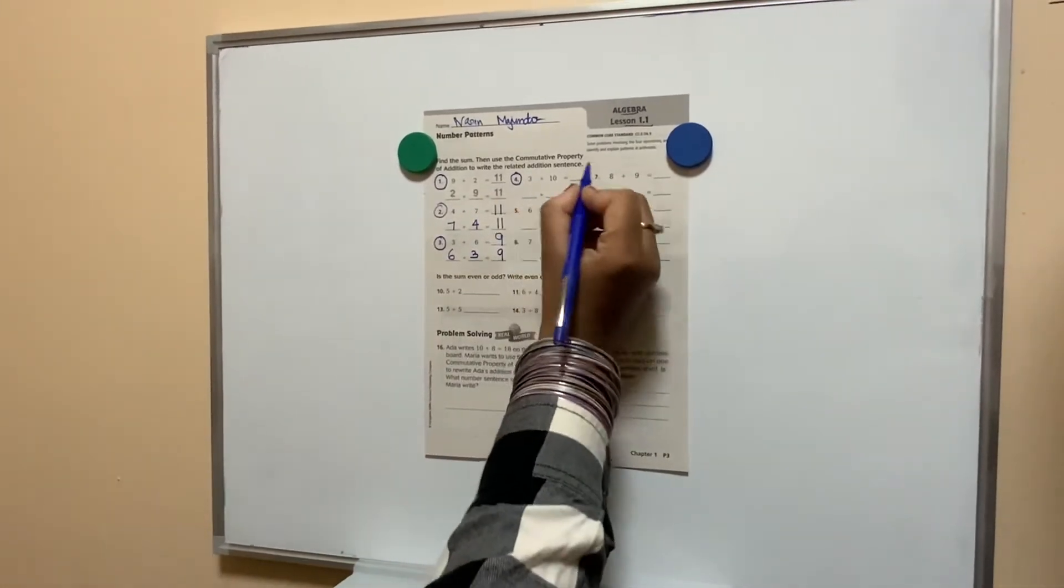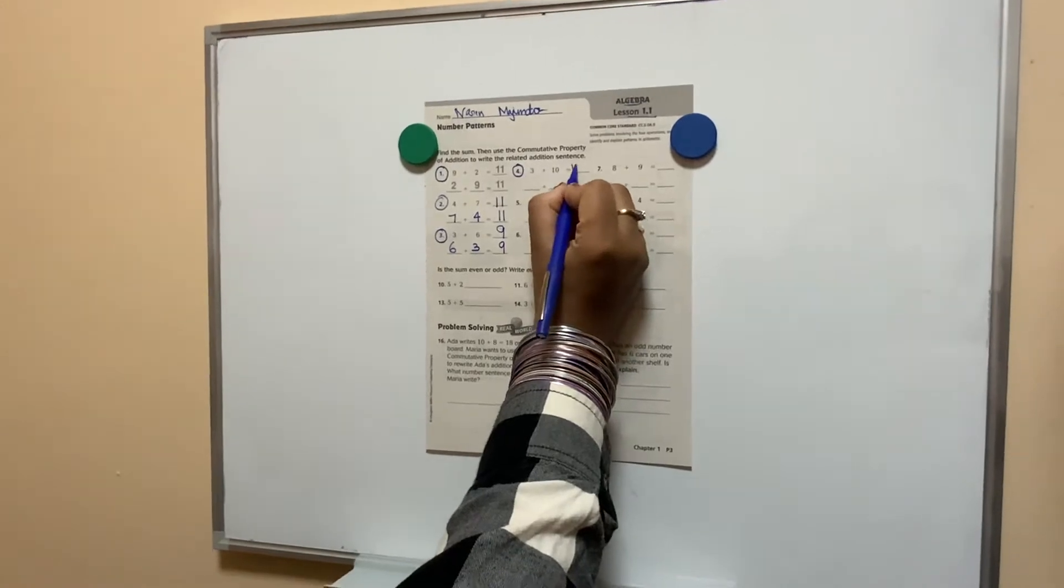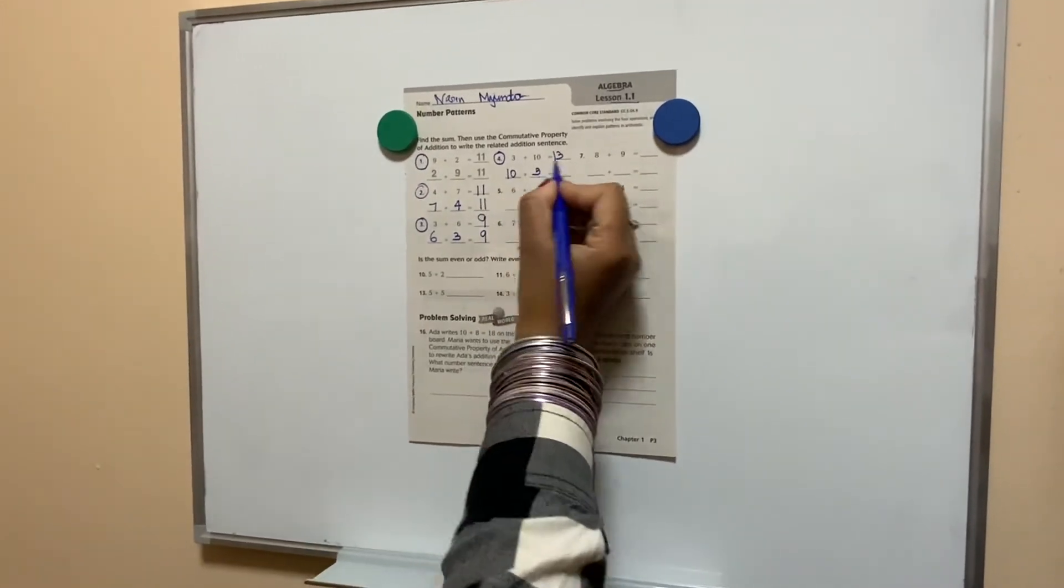Number 4. 3 plus 10 is? 13. 10 plus 3 is? 13.